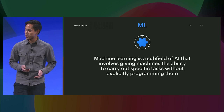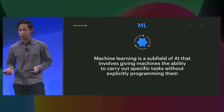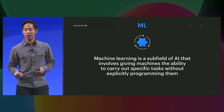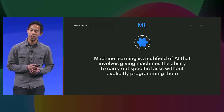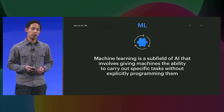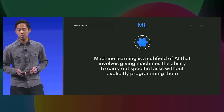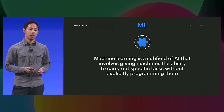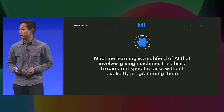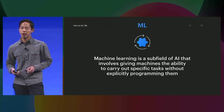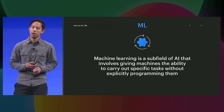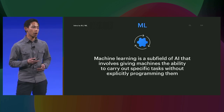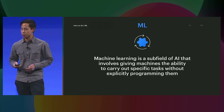Machine learning and artificial intelligence are two terms used pretty interchangeably, but they're actually not the same thing. Machine learning is a subfield of AI that involves giving a machine the ability to perform a task without being explicitly programmed to do so. In situations where it can be really tedious, difficult, or sometimes impossible to code every single rule a machine would need to perform a task, we can use machine learning instead.